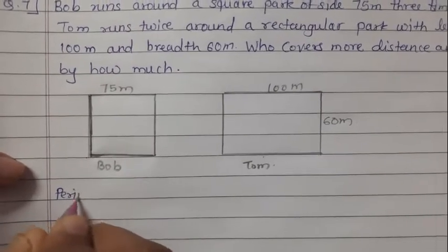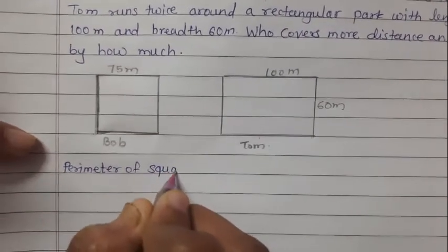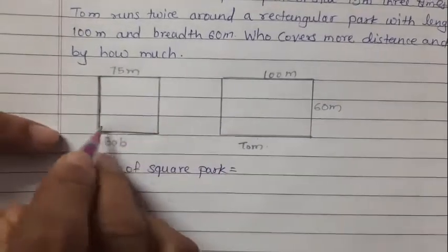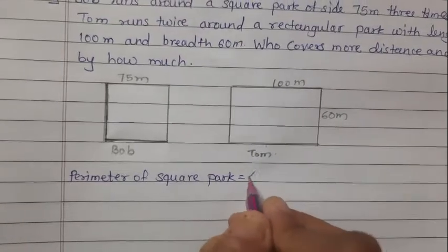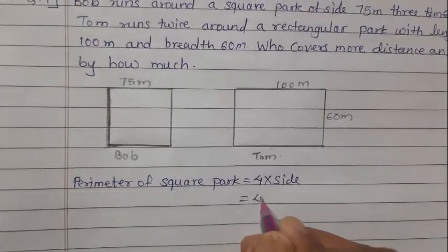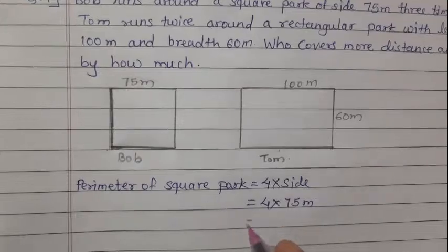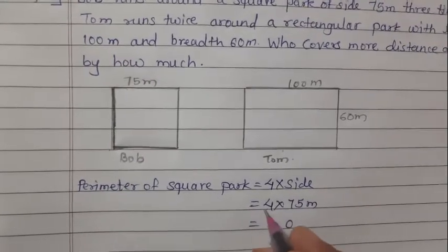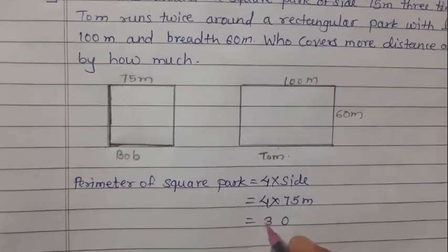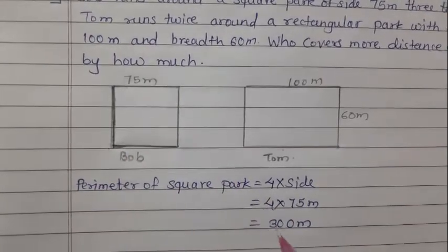Perimeter of the square park. The formula is 4 into side. The side is 75 meters. So 4 multiplied by 75: 4 fives are 20, carry 2; 4 sevens are 28, plus 2 is 30. So the perimeter of the square park is 300 meters.